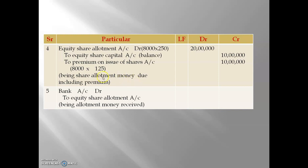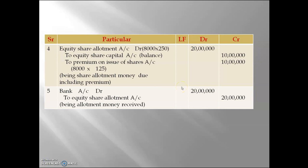Entry five — allotment money received: Bank Account Dr. to Equity Share Allotment Account. The amount is Rs. 20,00,000 on both debit and credit sides. Being allotment money received. These are the complete journal entries for issue of shares at premium with oversubscription and rejection.